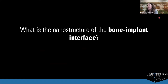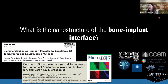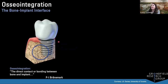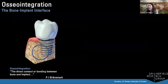Our question was: what is the nanostructure of the bone-implant interface? We've published this work over the last few years with collaborators at McMaster, in France, and in Sweden. A dental implant is one example of a bone-implant interface we study. We're interested in osseointegration — the contact between the implant material and bone. Historically, this was defined as direct contact or bone bonding, assessed at the light microscopy level, a really large length scale.